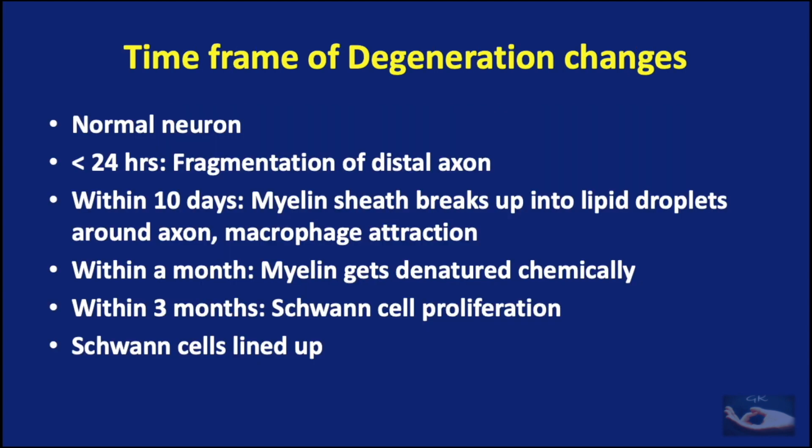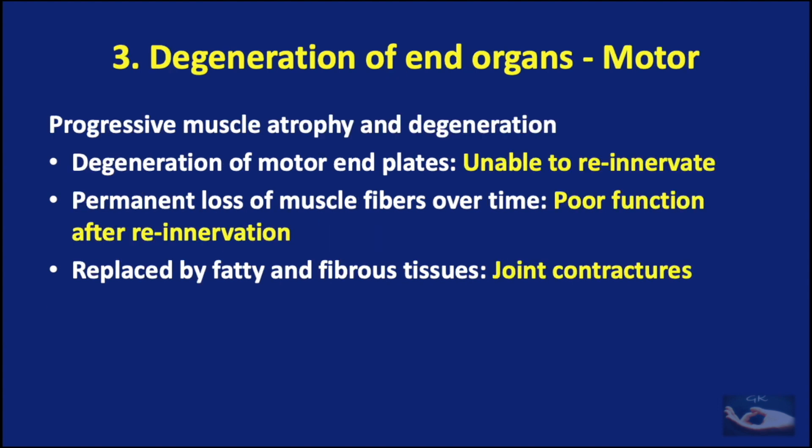All the degeneration changes occur within a specific time frame. Within 24 hours, there is fragmentation of the distal axon. Within 10 days, the myelin sheath breaks up into lipid droplets and macrophage attraction occurs. Within a month, the myelin gets denatured chemically. Within three months, the Schwann cells proliferate and form the bands of Büngner.